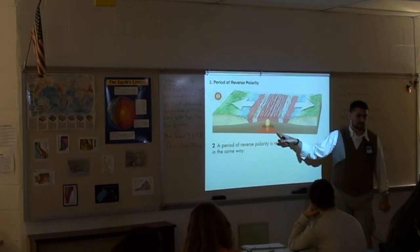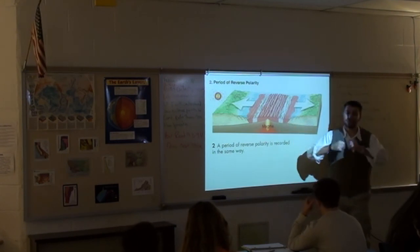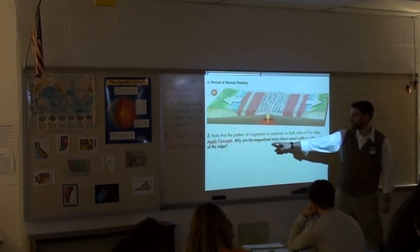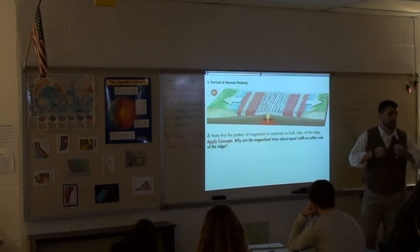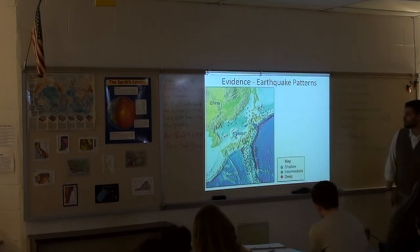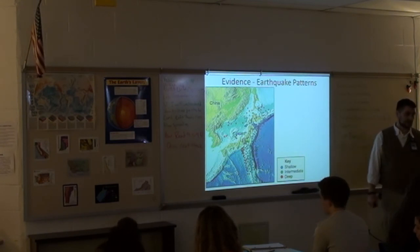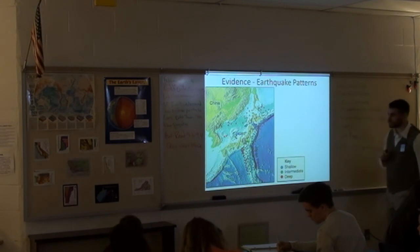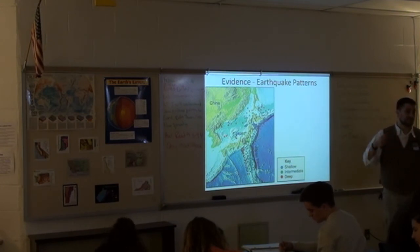What does this seem to say? Why does this side match that side? Because it's spreading equally — this is proving that the seafloor is actually spreading. This is why the book asks: why are the magnetized strips about equal width on either side of the ridge? Because this is proving that the seafloor is spreading. So write in your notes: evidence for seafloor spreading — number one, paleomagnetism. The second piece of evidence for seafloor spreading is earthquake patterns.